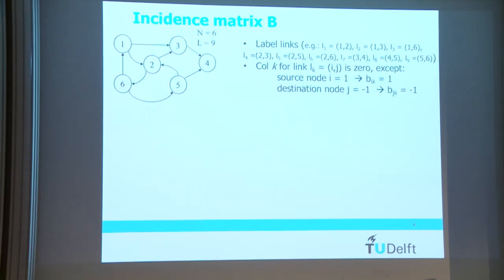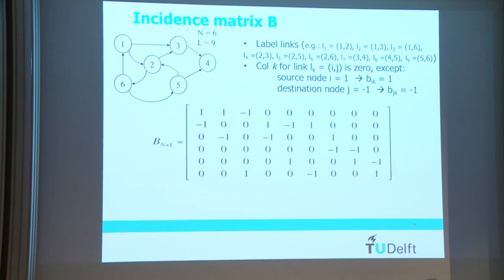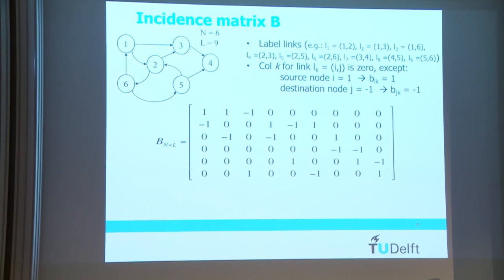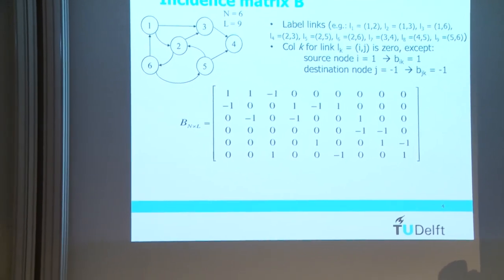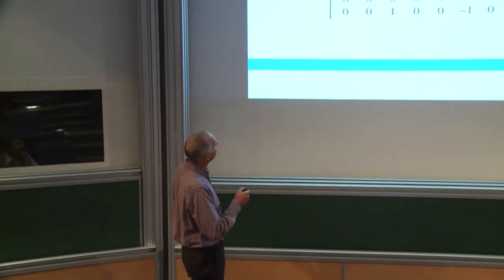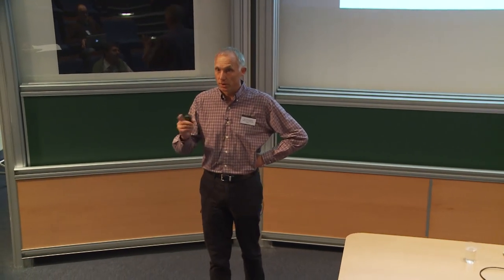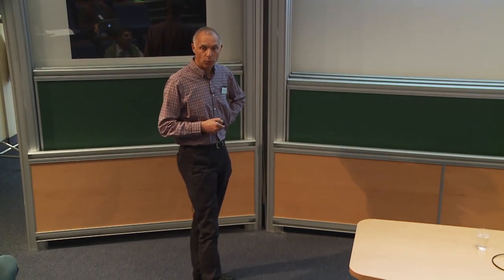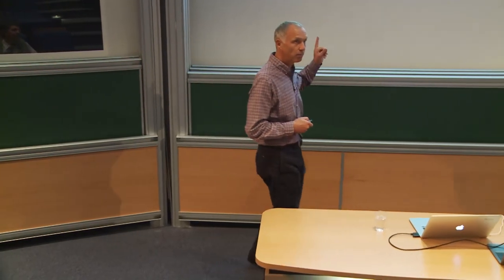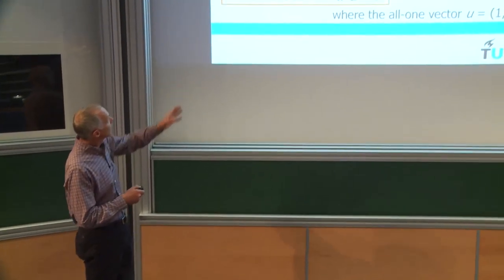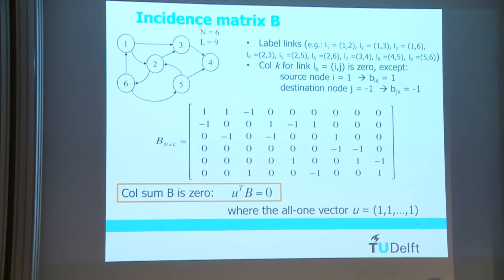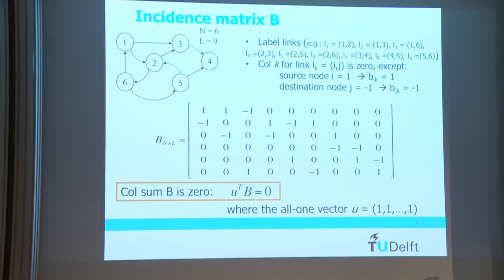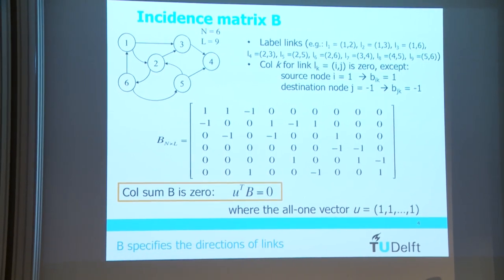The second matrix is the incidence matrix, which gives you the directions. The incidence matrix is not a square matrix — it has rows equal to the number of nodes and columns equal to the number of links. Each column represents a link: if the link starts at a node, we use plus one; if it ends, we use minus one. A nice property is that all column sums equal zero, meaning the all-ones vector multiplied by the incidence matrix gives zero. I only use the incidence matrix to specify directions.